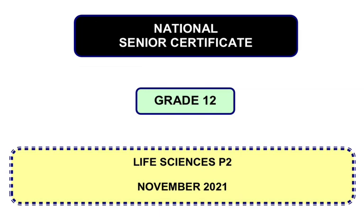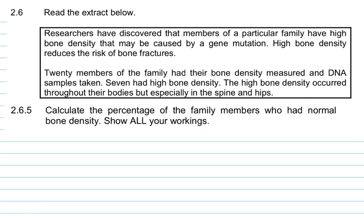So let's see how they'll ask this question in an exam. Now this example is going to come from Life Science Paper 2 November 2021. It's a grade 12 paper but it's good practice for everyone. Now this question is question 2.6 and they say read the extract below. Researchers have discovered that members of a particular family have high bone density that may be caused by a gene mutation. High bone density reduces the risk of bone fractures. 20 members of the family had their bone density measured and DNA samples taken. 7 had a high bone density. The high bone density occurred throughout their bodies but especially in the spine and hips.